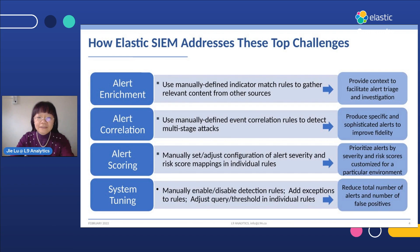To help prioritize alerts, Elastic SIEM supports setting or adjusting the severity and risk score mappings of individual rules to produce customized severity and risk scores in a particular environment. The number of alerts is largely managed through careful system tuning by activating, deactivating, or updating the setting of each detection rule. Users can also fine-tune detection rules by adding exceptions and adjusting query logics and thresholds to help reduce false positives.